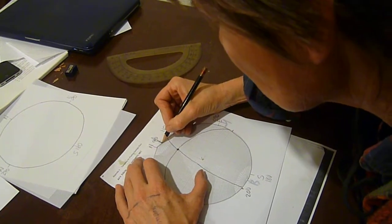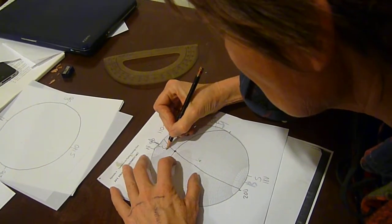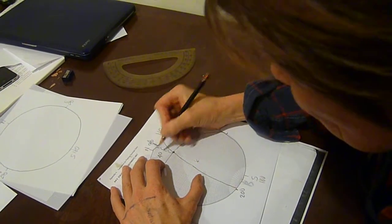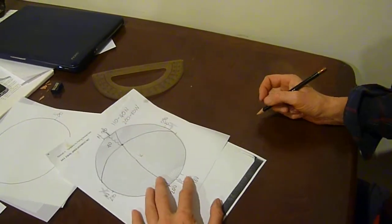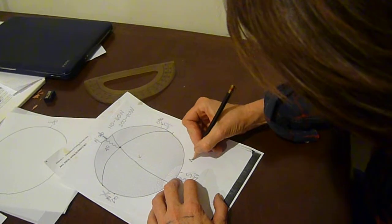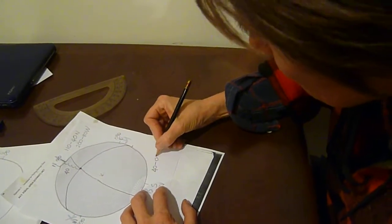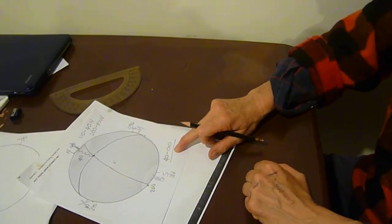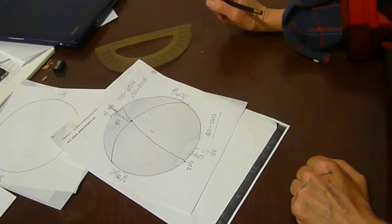And while I'm on the line, I can count the plunge down 10, 20, 30, 40 degrees. So this line has an orientation of 40 degrees plunge towards a bearing of 010. That's the line of intersection between these two planes.